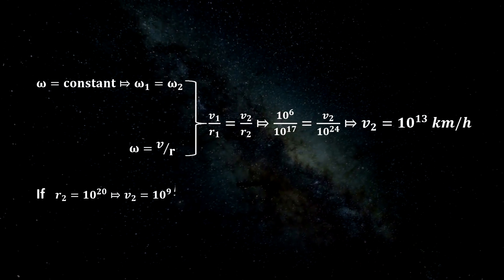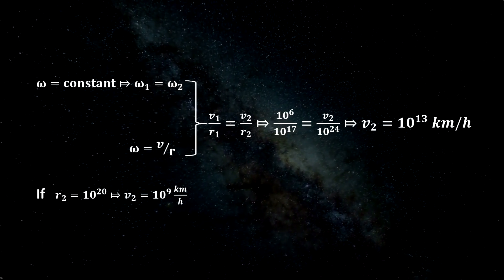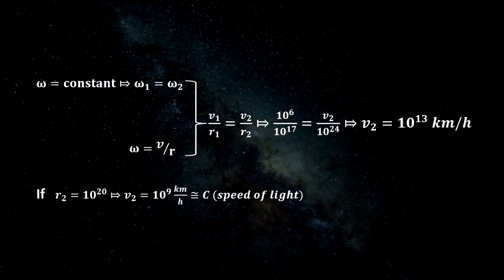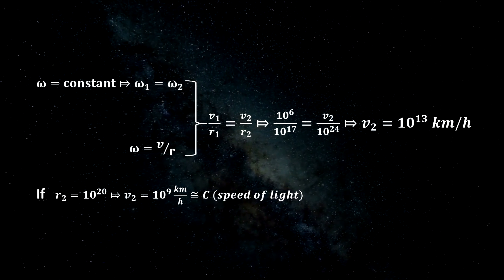By this calculation, we can prove that even celestial objects that are at 10 raised to the power of 20 km rotate at the speed of light.